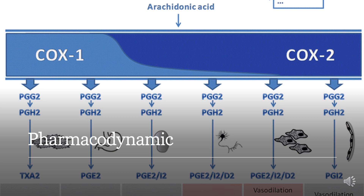Celecoxib inhibits Cyclooxygenase-2 (COX-2) enzyme, reducing pain and inflammation. It is important to note that though the risk of bleeding with Celecoxib is lower than with certain other NSAIDs, it exists nonetheless and caution must be observed when it is administered to those with a high risk of gastrointestinal bleeding.